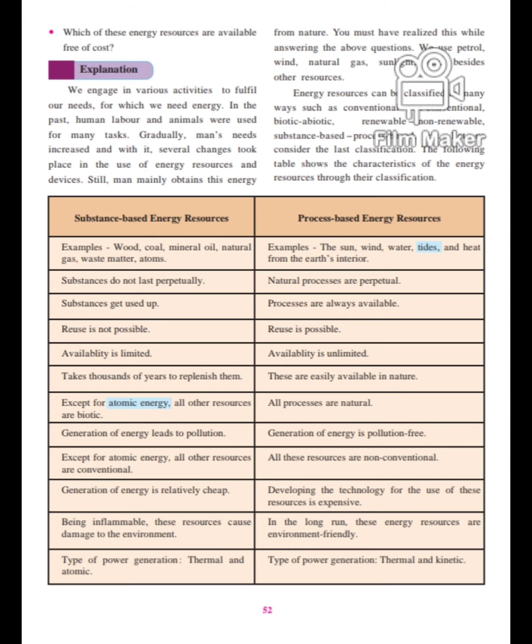We use energy resources and different devices which make our work easier. Man mainly obtains this energy from nature. Now, in figure 9.2, you have seen that fuel is filled in a motor car — petroleum or diesel. The girl reading a book is using a lantern, where kerosene is used. In the next picture, a girl is playing with a pinwheel and her father is winnowing grain — there, wind energy is used.